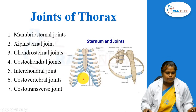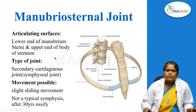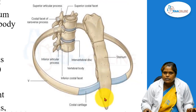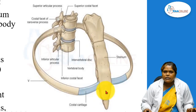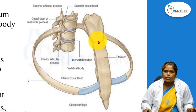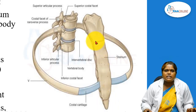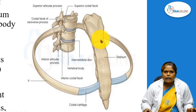We will see one by one about all these joints. First, the manubrio-sternal joint. The sternum is not a single piece of bone — it has a manubrium, a body of sternum, and a xiphisternum. All three pieces articulate to form the sternum, and between the three pieces we have two joints. The manubrio-sternal joint is formed by the lower end of the manubrium sternum and the upper end of the body of sternum.